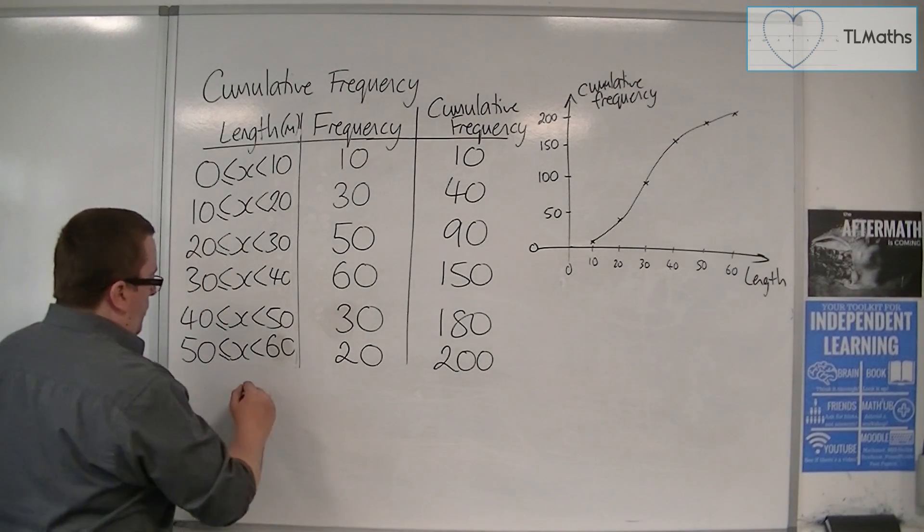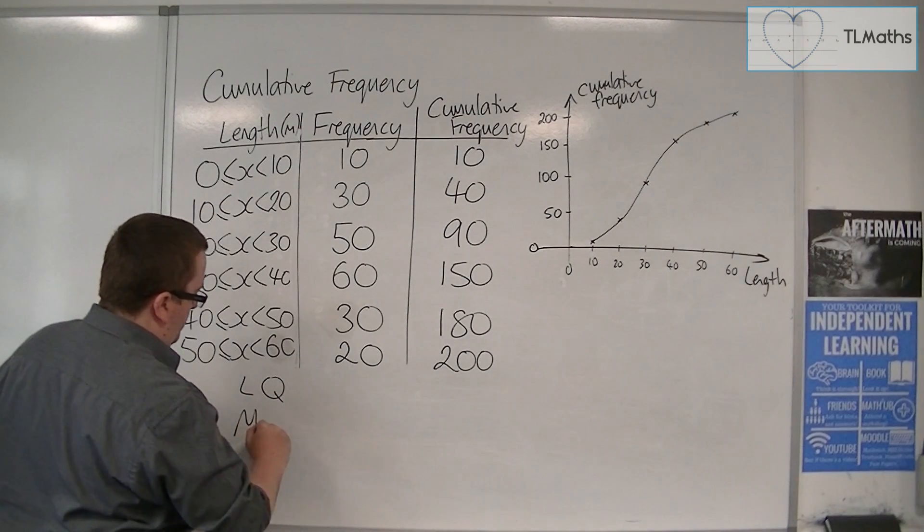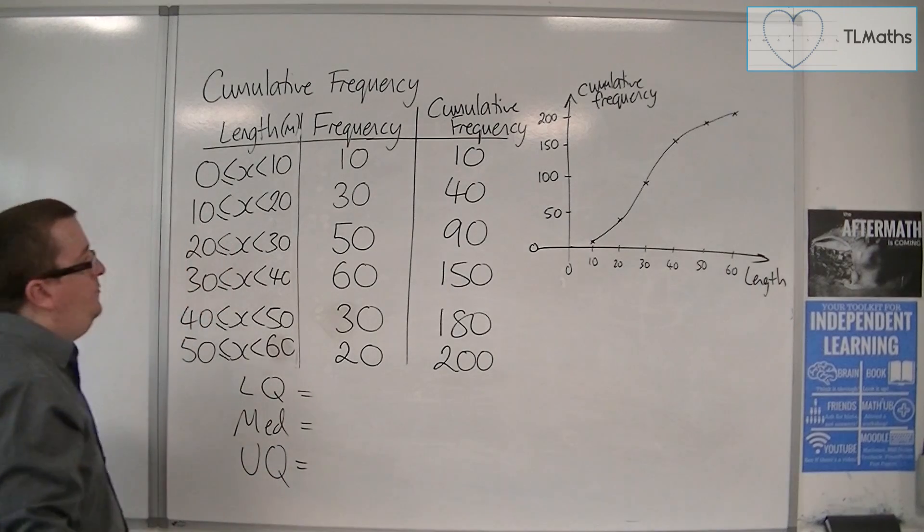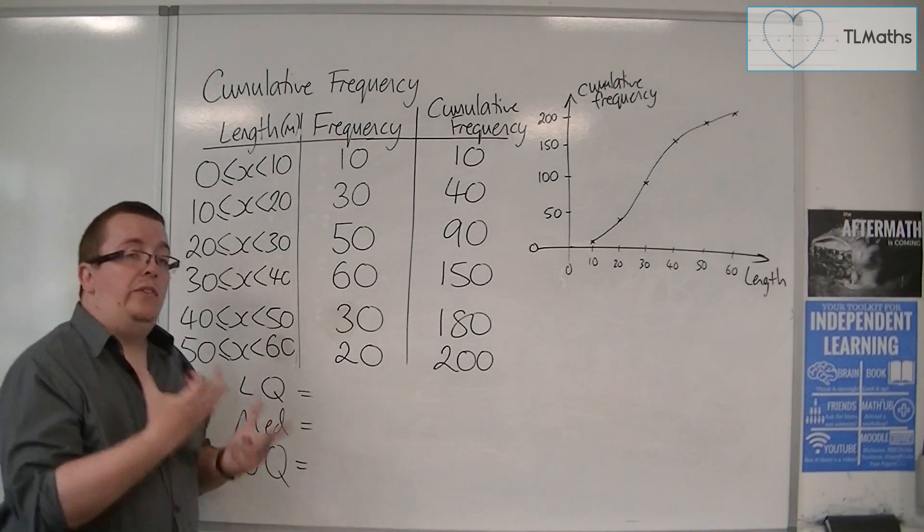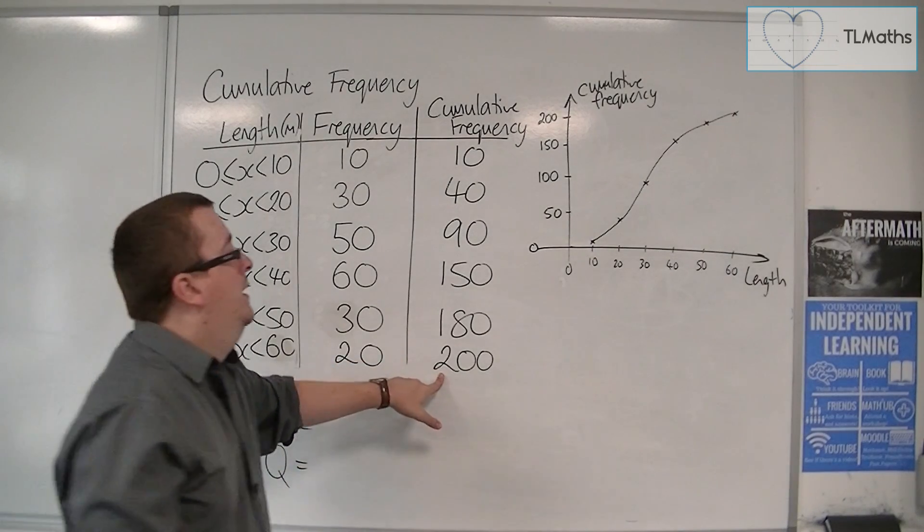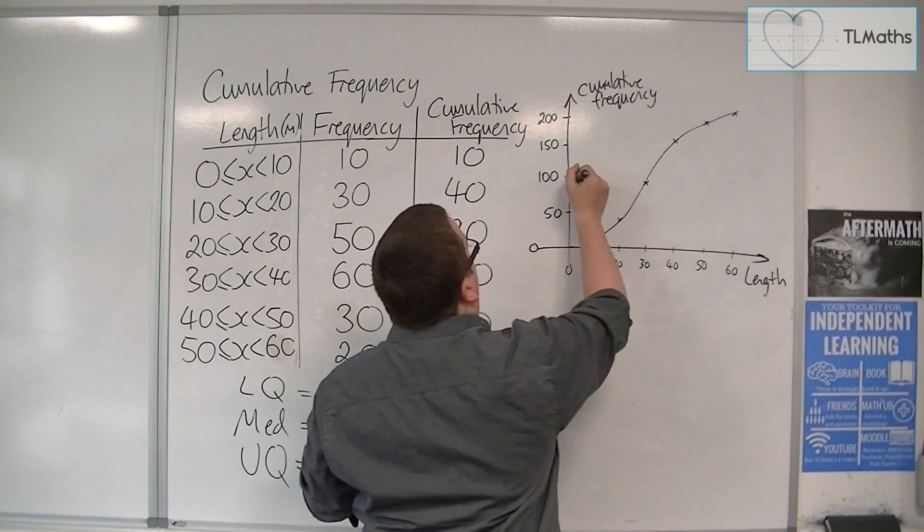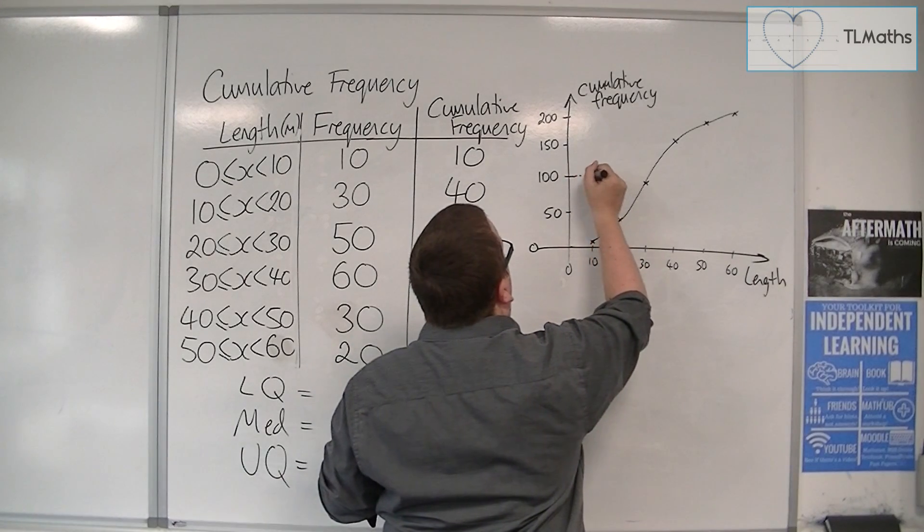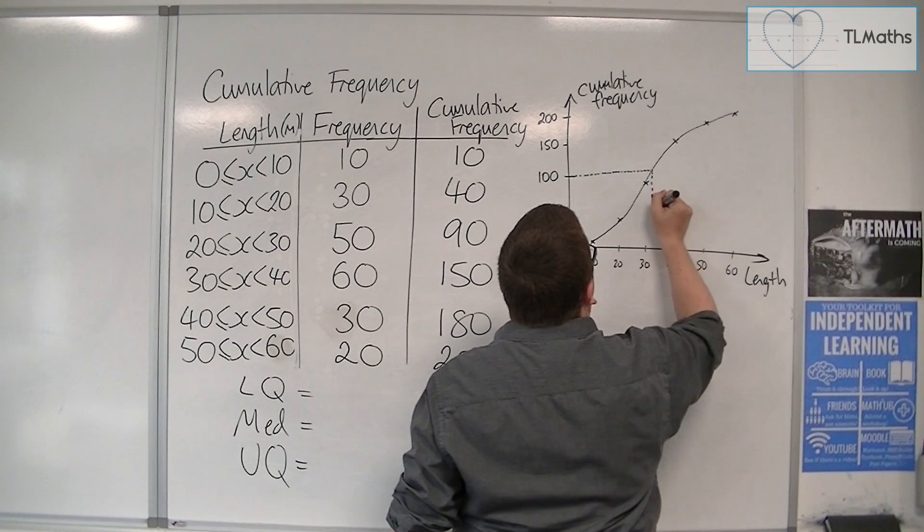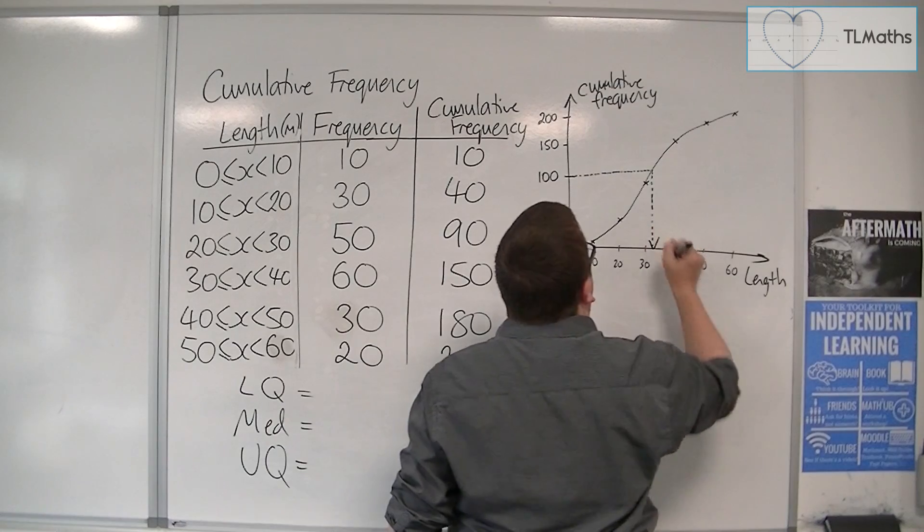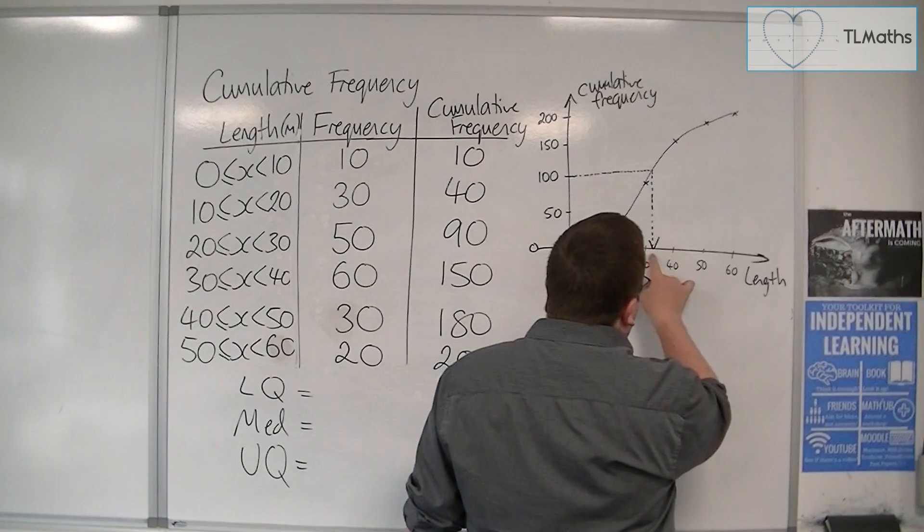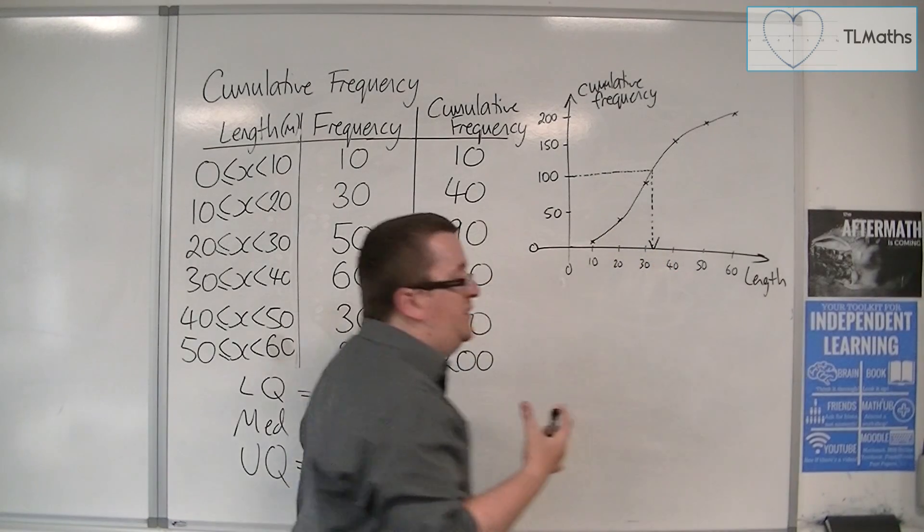So for the lower quartile, median, and upper quartile, for the median, we know that it's halfway. And so we take the halfway point of 200. And so that would be 100. So at 100, we then go horizontally to the curve and then go straight down, vertically downwards. And we would read off that number.